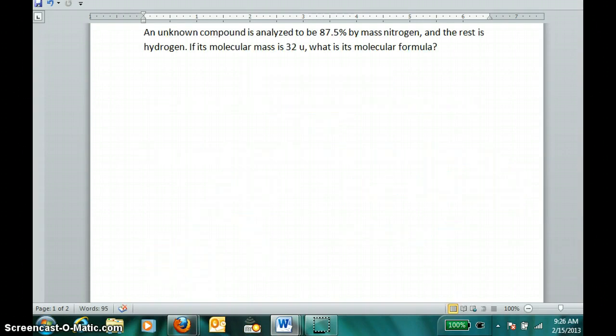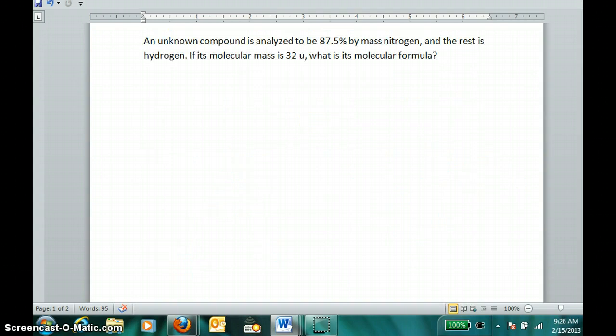Some example problems start off easily and we'll get to the more involved problems. This problem tells us that an unknown compound is analyzed to be 87.5% by mass nitrogen and the rest is hydrogen. That means I can assume that if I had a 100 gram sample, 87.5% of the grams would be nitrogen and the other 12.5 grams would be hydrogen.